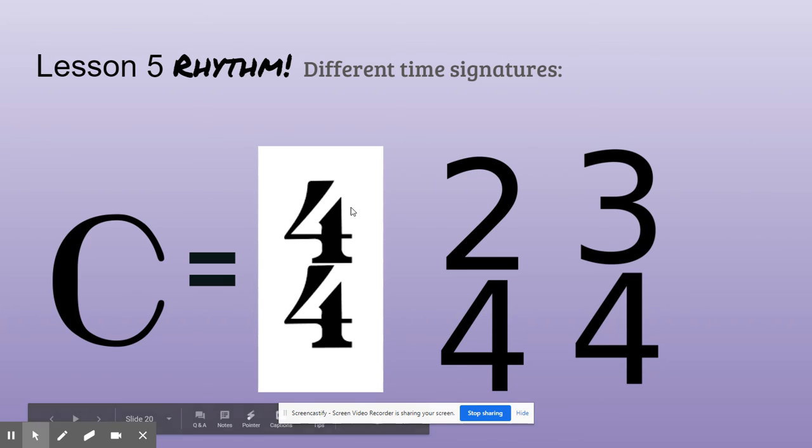The top number, this one has a 4, this one has a 2, this one has a 3. That tells me how many beats are in each measure. So if you see a 2-4, there's only going to be two beats in that measure. If you see a 3-4, that means there's only going to be three beats in the measure.